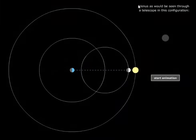Let's look at the phases of Venus, both for the Ptolemaic system and also the Copernican system.